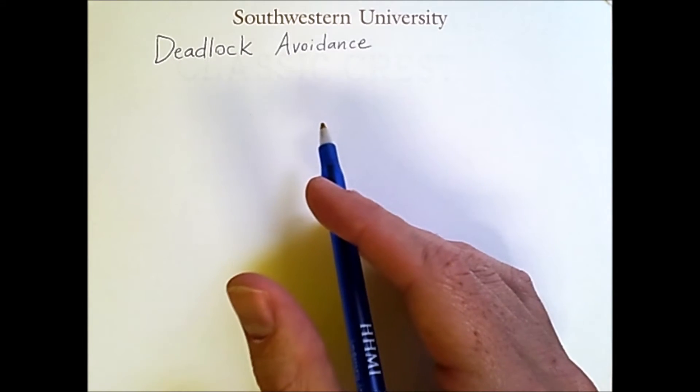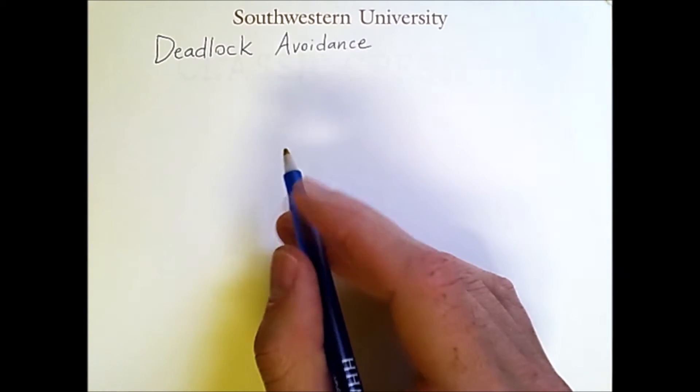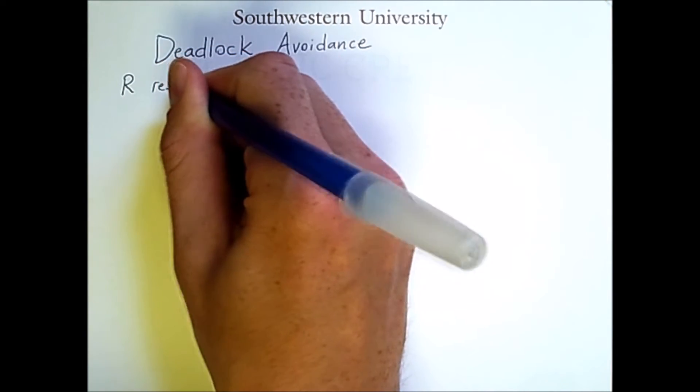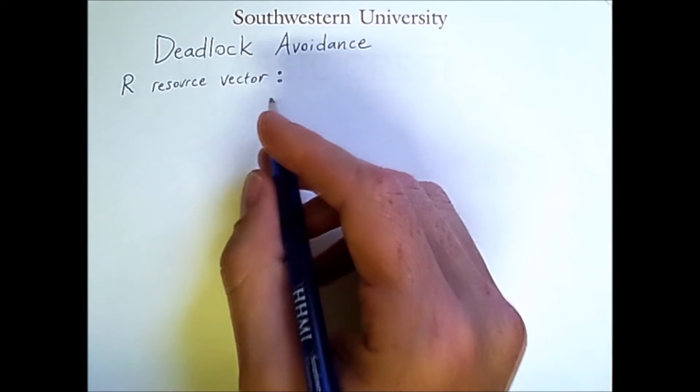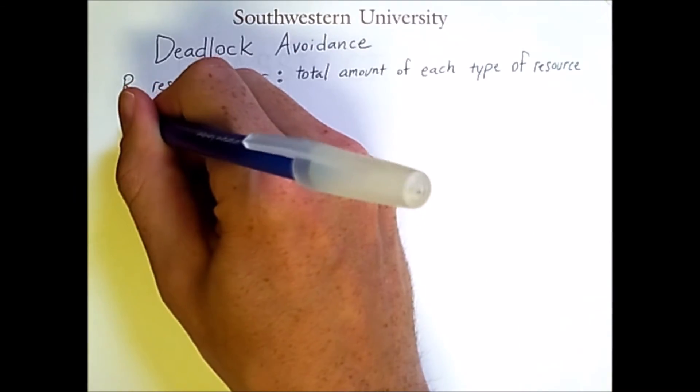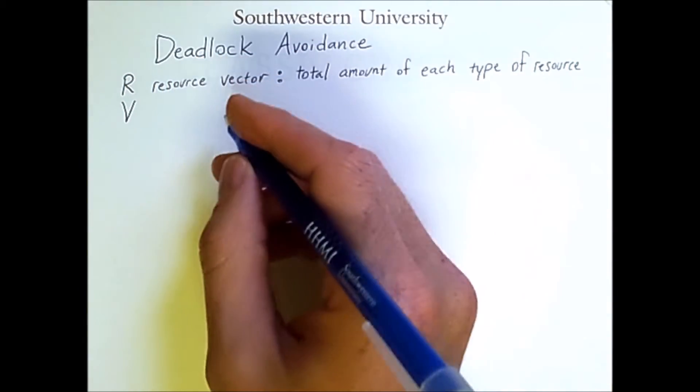Specifically, we assume we have the following information. R is a resource vector, and this tells us the total amount of each type of resource that the system has available. V is the available vector.